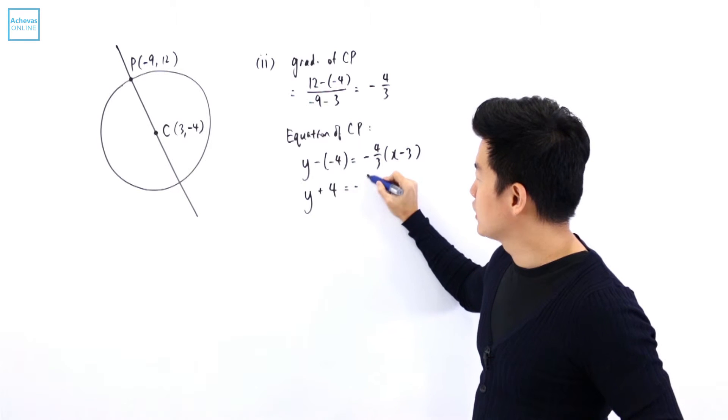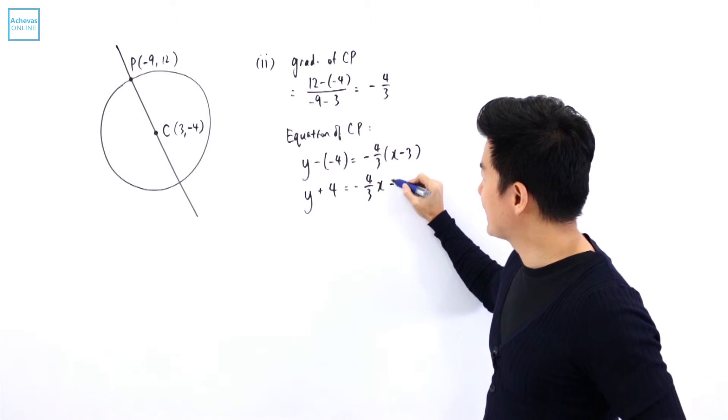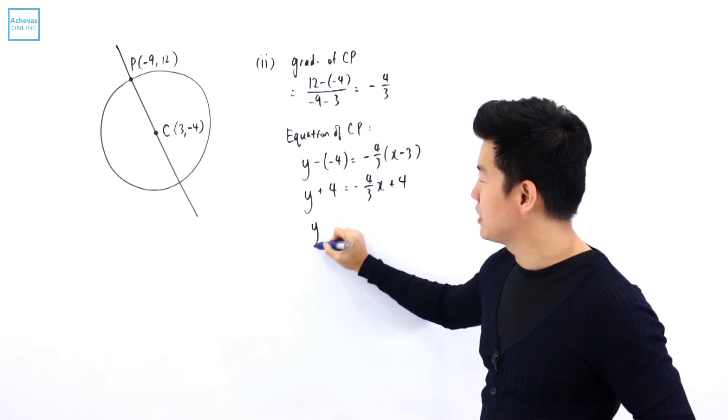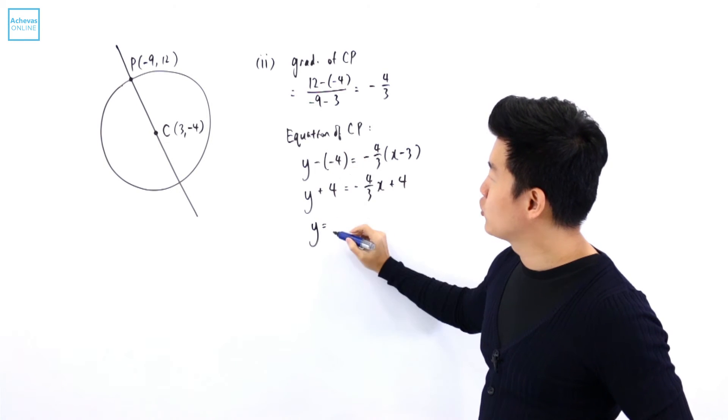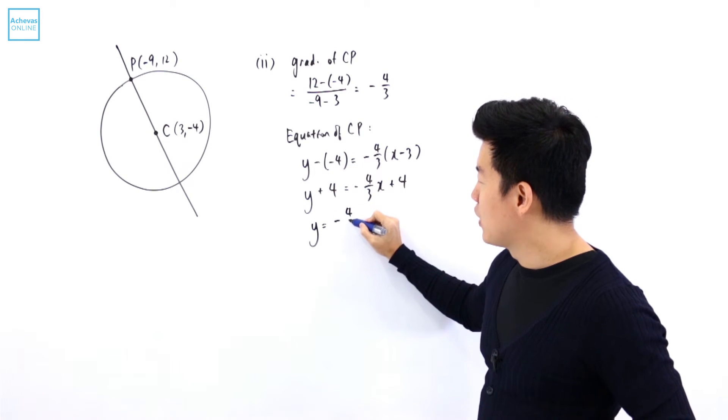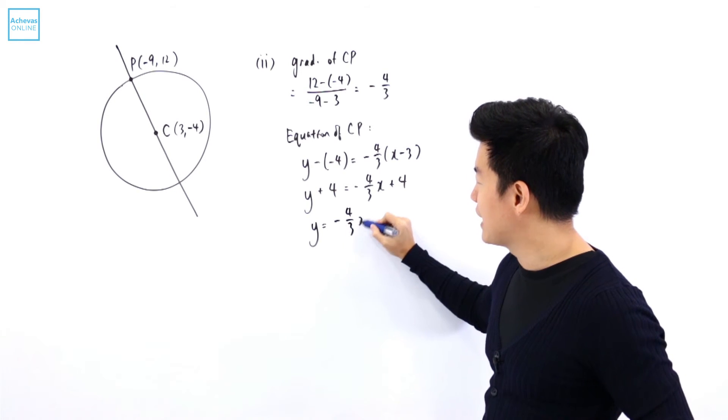Y plus 4 is equal to minus 4 over 3X plus 4. The 4s will disappear. So the line that passes through CP is going to be Y is equal to minus 4 over 3X.